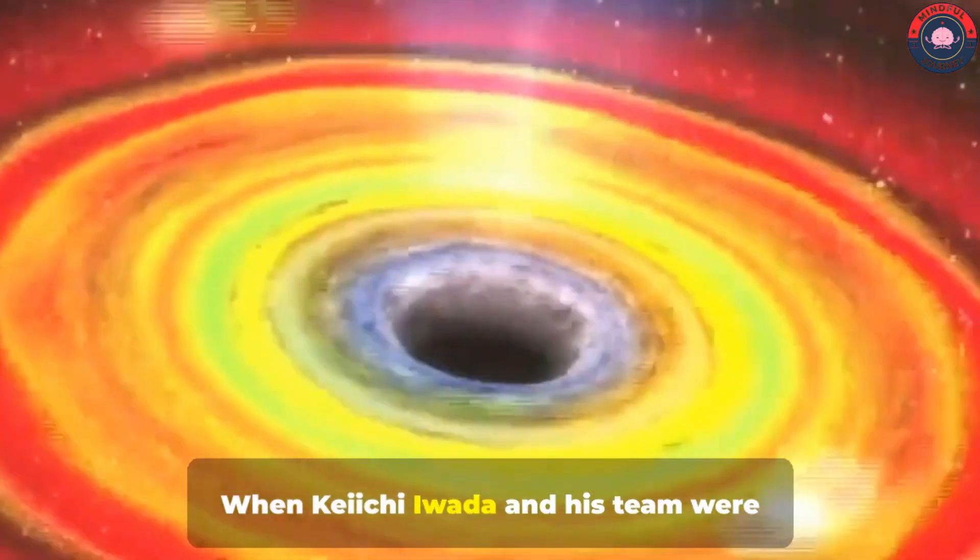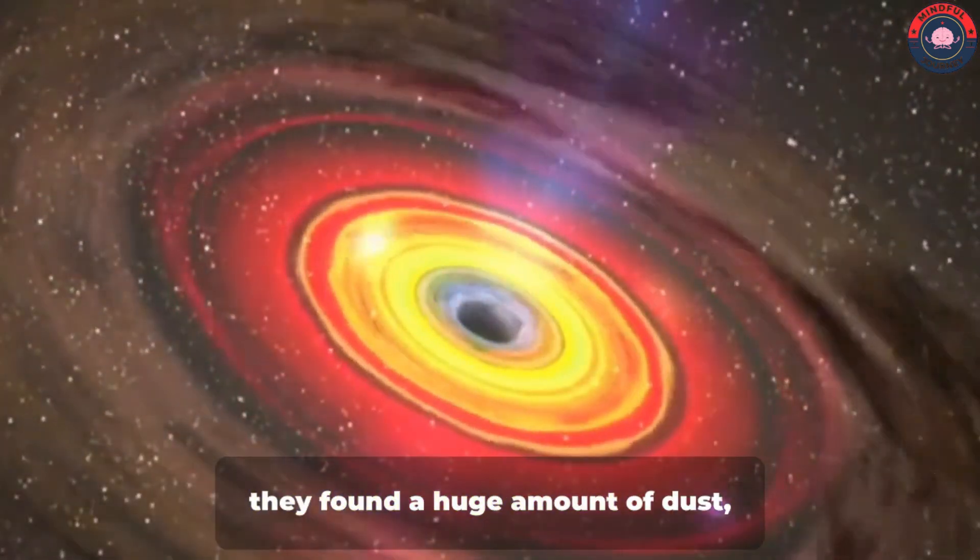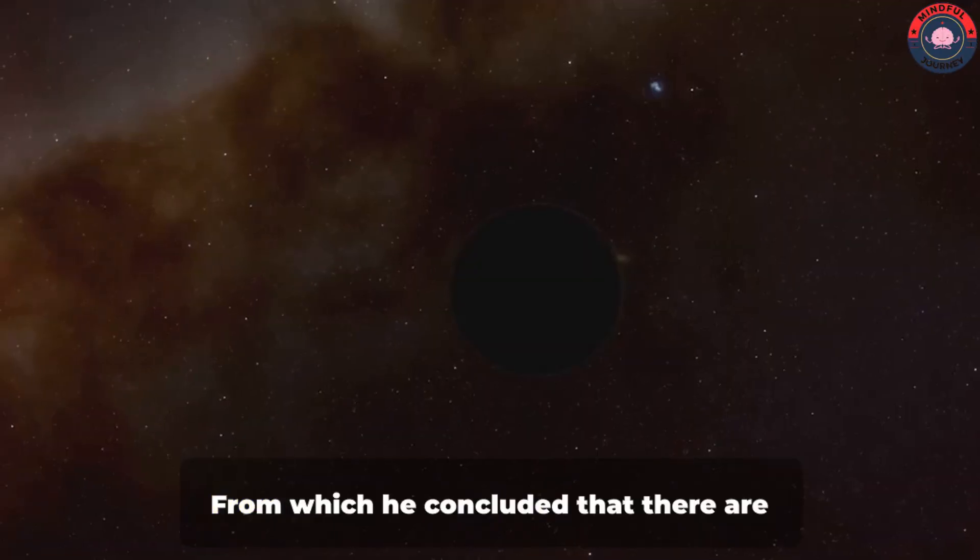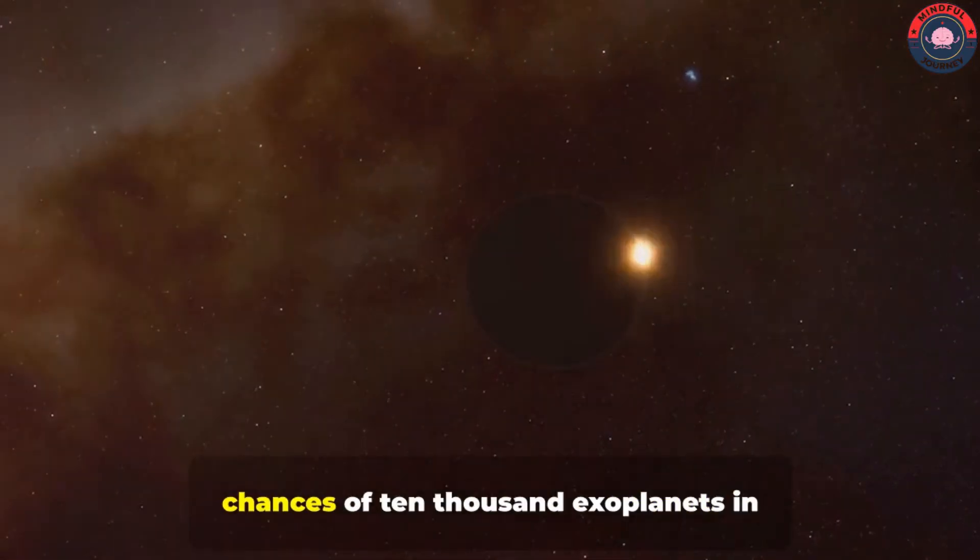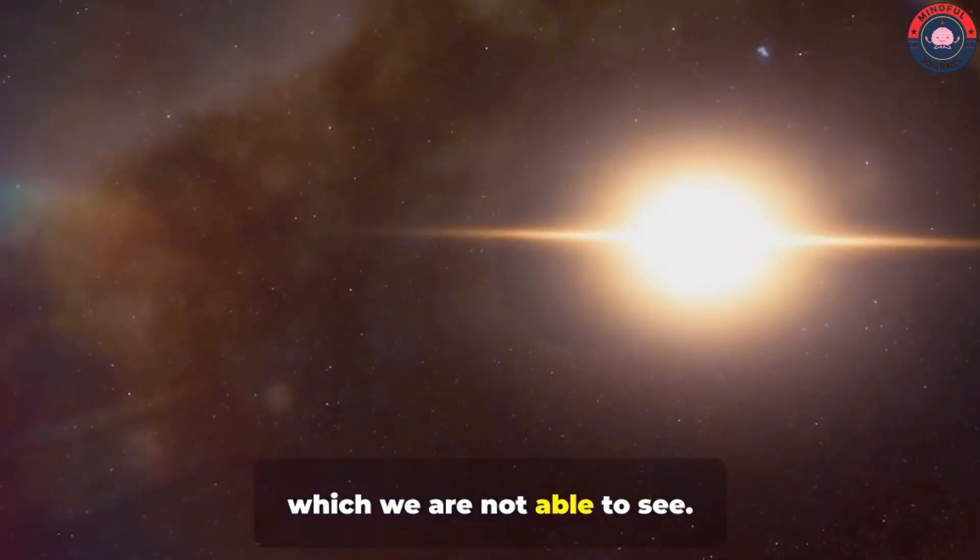When Keiichi Iwada and his team were doing research on black holes, they found a huge amount of dust, rocks, and gases around a supermassive black hole. From which he concluded, that there are chances of 10,000 exoplanets in those rocks and gases, which we are not able to see.